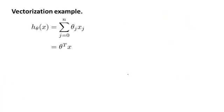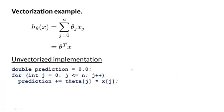That was Octave, but the issue of vectorization applies to other programming languages as well. Let's look at an example in C++. Here's what an unvectorized implementation might look like. We again initialize prediction to 0.0, and then we now have a for loop for j equals 0 up to n. Prediction plus equals theta j times xj, where again you have this explicit for loop that you write yourself.